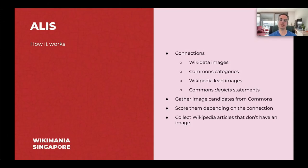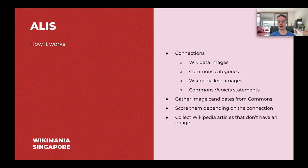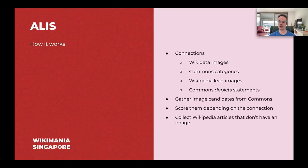Relevant image connections come from two Wikidata properties: image P18 and Commons categories P373. Another signal stems from Wikipedia lead images. We also use the depicts statements from the Structured Data on Commons project. The first step of the pipeline is to gather all image candidates from Commons that match the given connections. Then we assign a relevance score depending on the connection: Wikidata images get the best score, Commons categories and Wikipedia lead images follow, while the depicts statements are the least strong connection — this is according to a manual evaluation we made. Finally, we collect Wikipedia articles that don't have an image and match them against all images for suggestion.